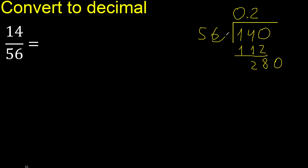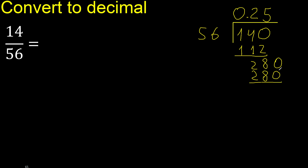56 multiplied by which number? 5 is exact — 280, not greater. Subtract is 0. Therefore finish.